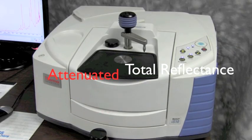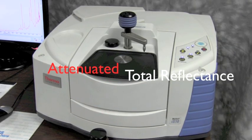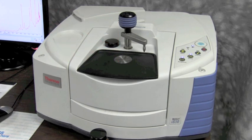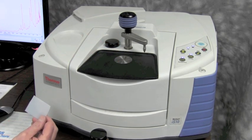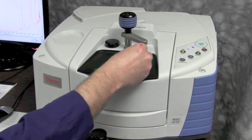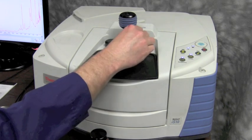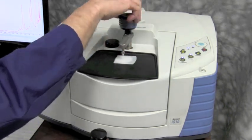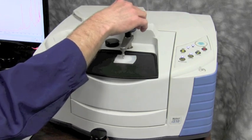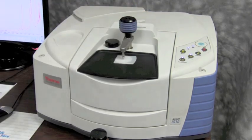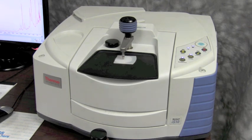Another sampling method is attenuated total reflectance, and that lets us put a solid sample on top of a crystal and then we tighten down the clamps so that the solid sample is held in tight proximity to the crystal, and then the IR light is bounced off of that and we sample the material in that method.